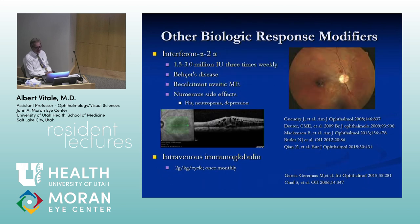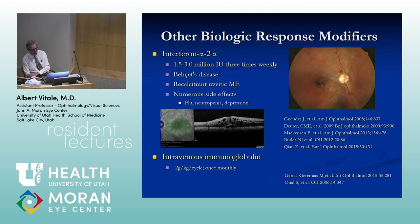For completeness, there are other biologic agents such as interferons. Interferon alpha-2a, given three times a week or weekly, has been useful in Behcet's disease in the European experience, and is actually very useful in recalcitrant macular edema. I know of one patient for whom nothing else worked other than this. IV IVIG has also been useful in patients with autoimmune retinopathy.